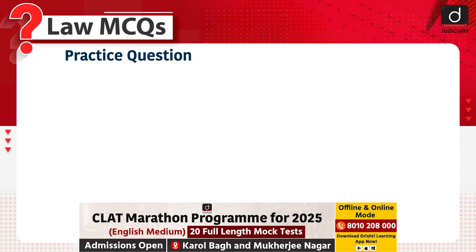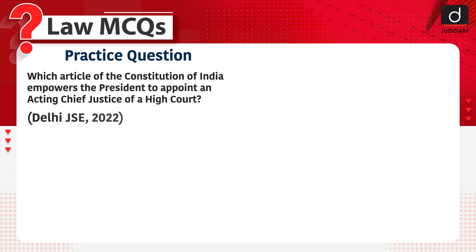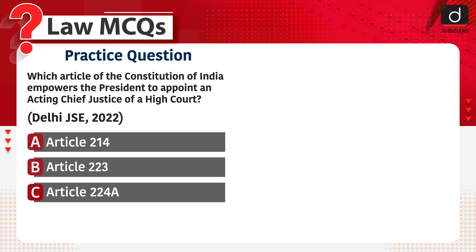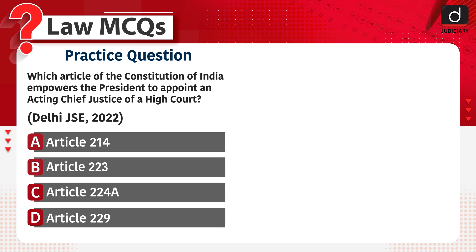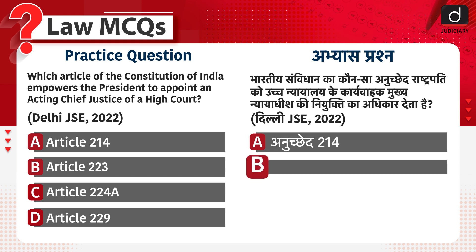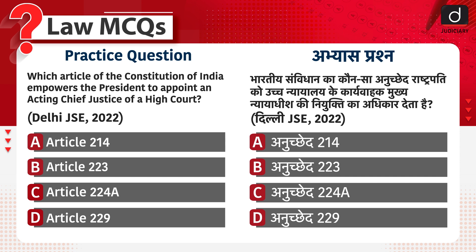Now it is time for the practice question: which article of the Constitution of India empowers the President to appoint an acting Chief Justice of a High Court? Article 214, Article 223, Article 224A, or Article 229? Bhartiya Samvidhan ka kaun sa anuchhed Rashtrapati ko Uchch Nyayalay ke karyakari mukhya nyayadhish ki niyukti ka adhikaar deta hai? Anuchhed 214, Anuchhed 223, Anuchhed 224A, yaa Article 229?